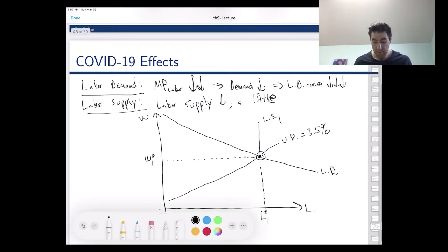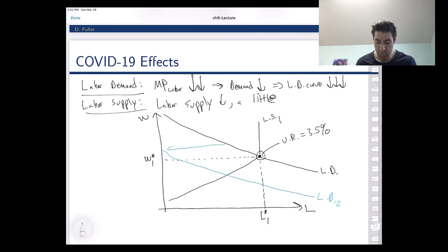Now what's going to happen as a result of this crisis is we're going to have a big decrease in labor demand. Why? Well firms don't want to hire as many workers because the workers aren't as productive because they can't do anything. Nobody wants to buy anything, there's not much for the workers to do. So workers are less productive, firms want to hire fewer of those workers. So there's a big decrease in labor demand and we'll also have some small decrease in labor supply.